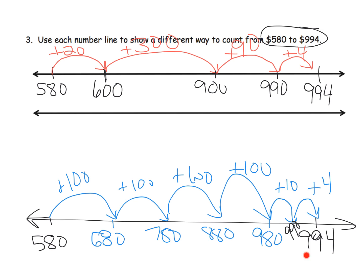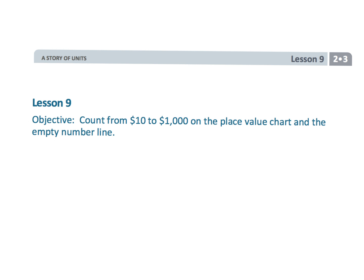So there's a couple of different ways that we can show our hopping on this empty number line to go from 580 to 994. And that wraps up second grade module 3 lesson 9—still using money, but connecting it to the place value and to the empty number line.